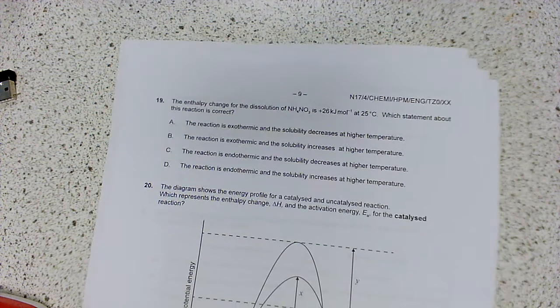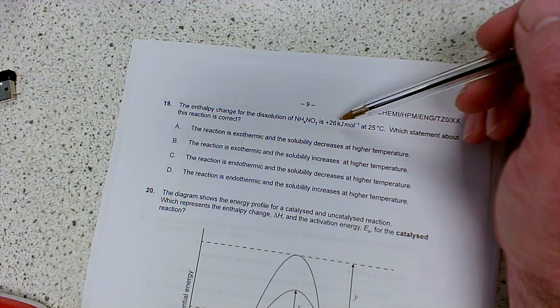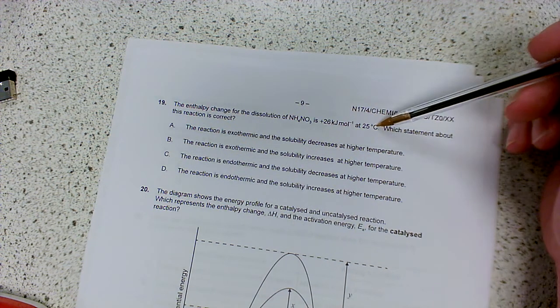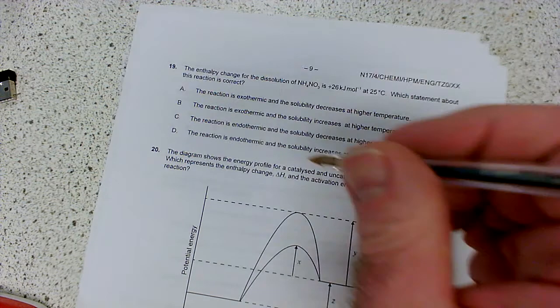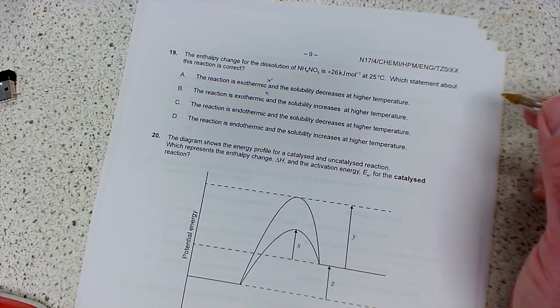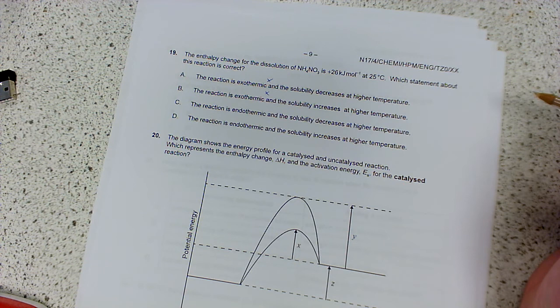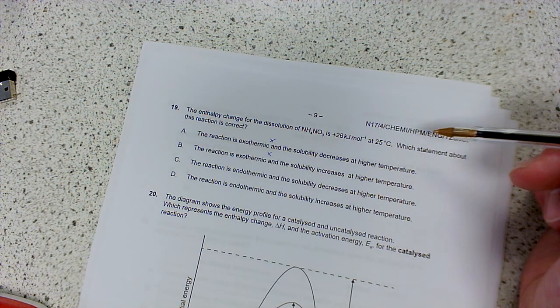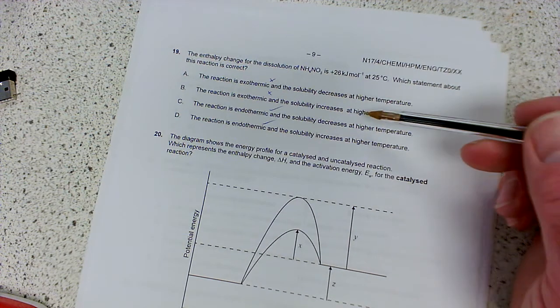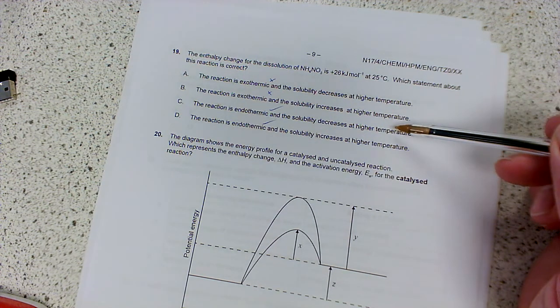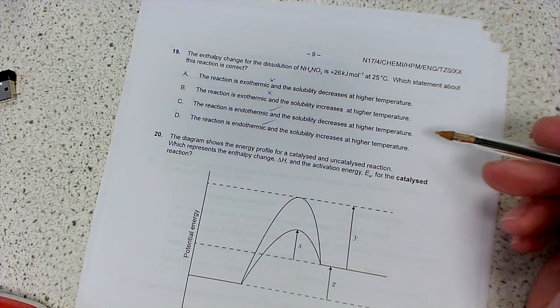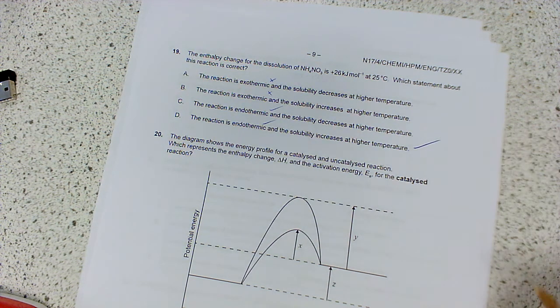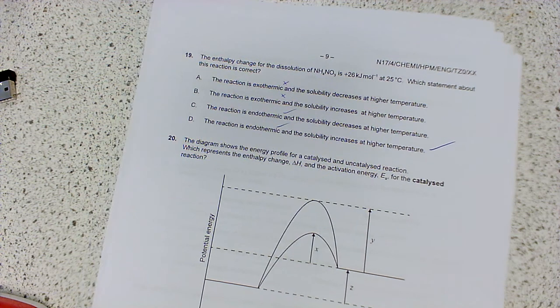Number 19: the enthalpy change for the dissolution of ammonium nitrate is plus 26 kilojoules per mole at 25 degrees. Which statement about this reaction is correct? These are wrong because it's not exothermic, it's endothermic because the enthalpy change is plus 26, not minus 26. The temperature would decrease. Solids become more soluble at higher temperature - the hotter the liquid, the more material you can dissolve in it. So it's going to be: the solubility increases at higher temperature.